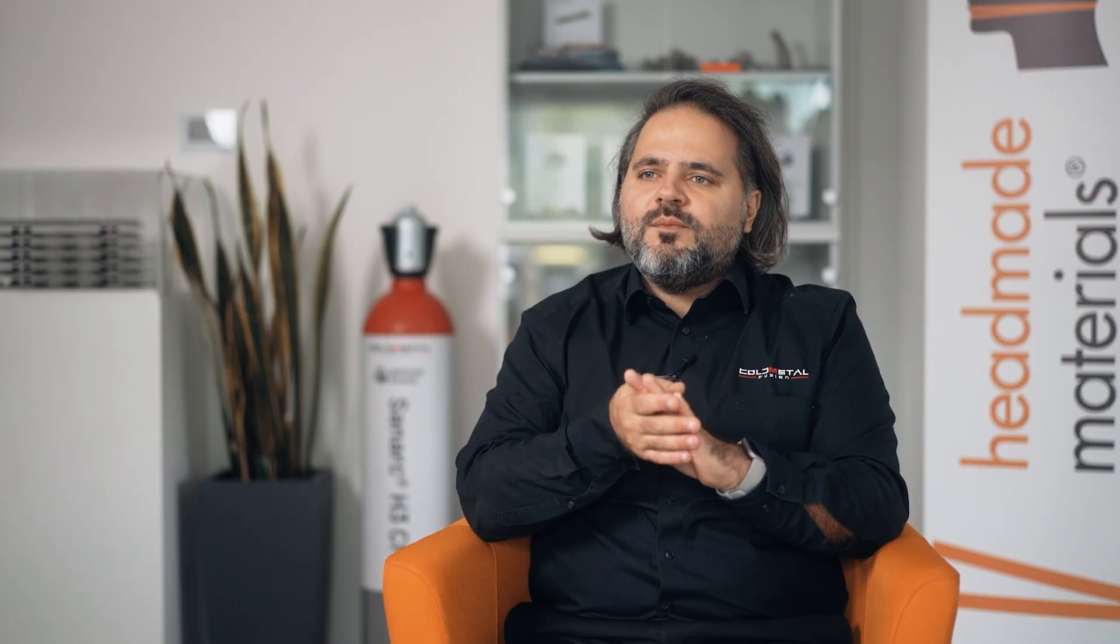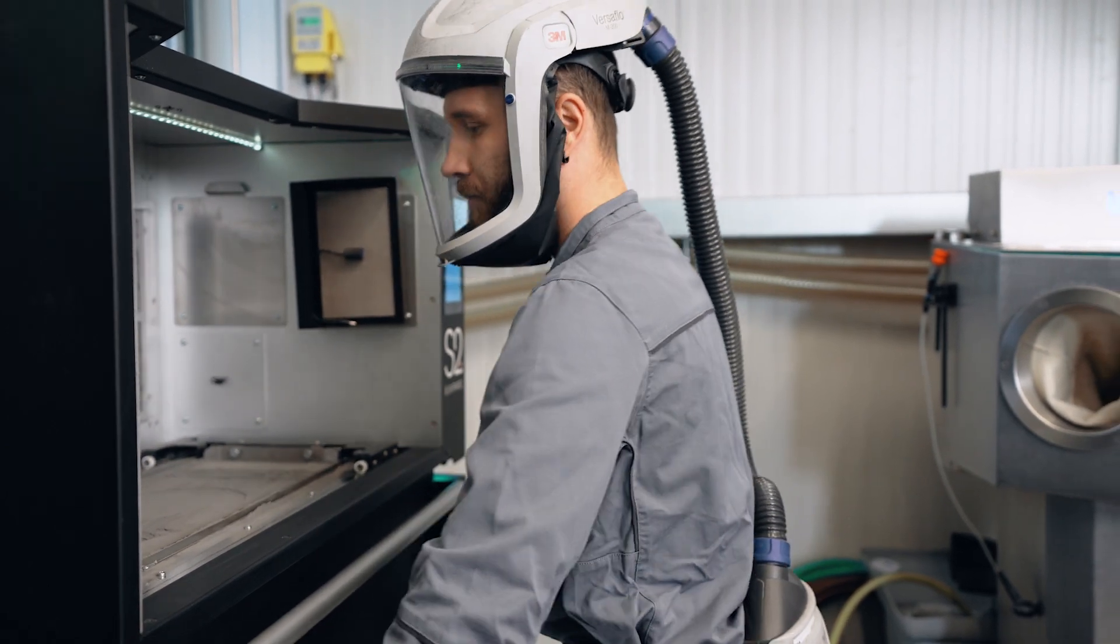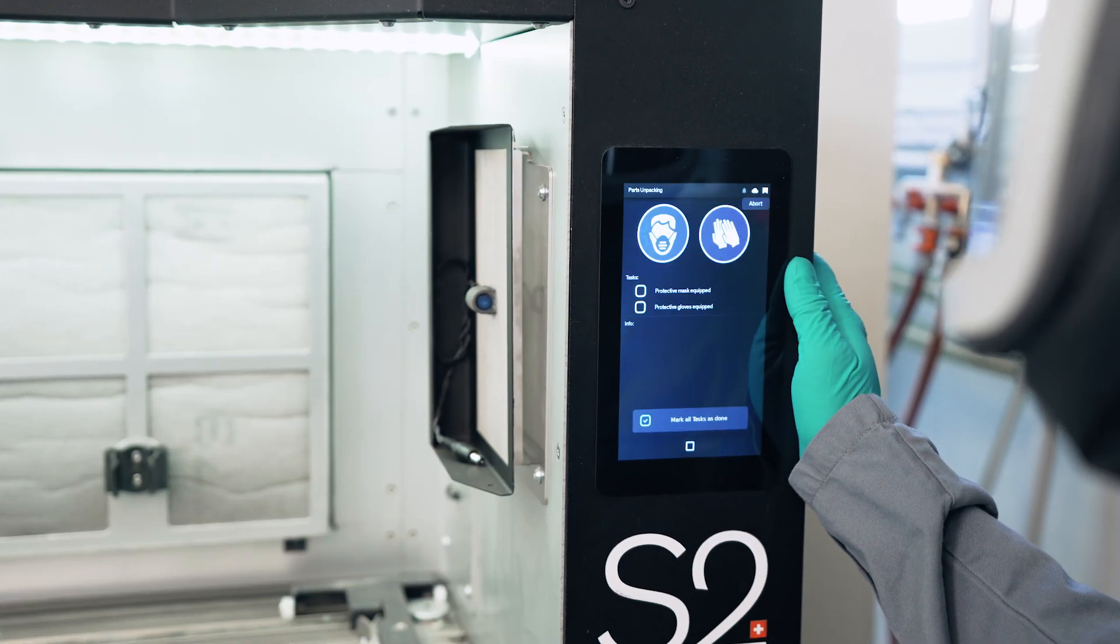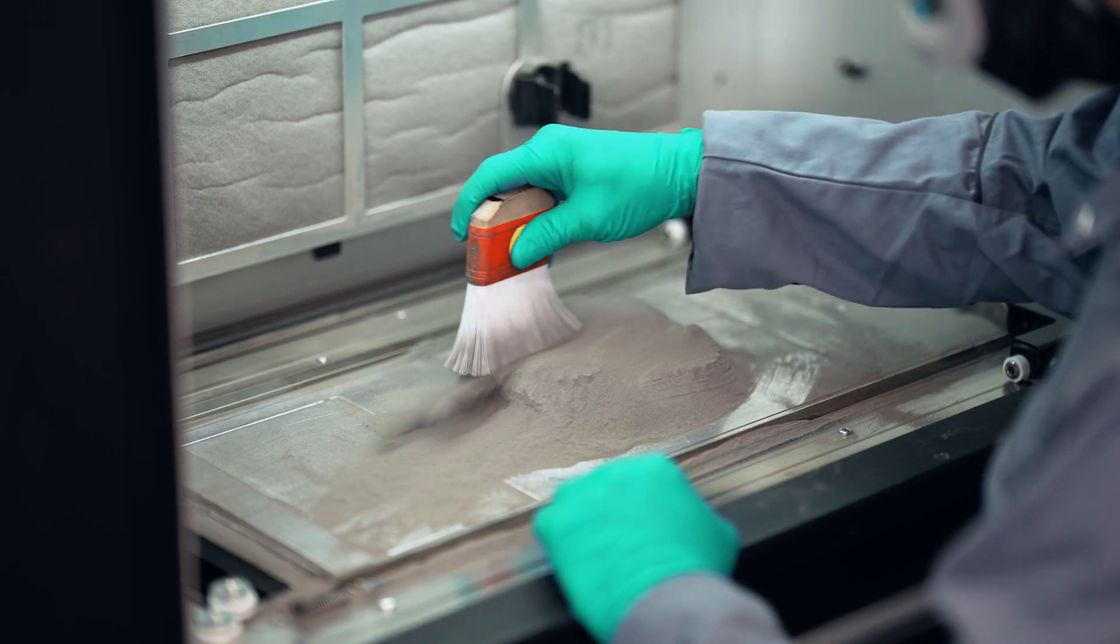After we're done with printing, the parts are called green parts and these green parts have to be removed from the overall powder cake and brushed to really have neat fine surfaces.